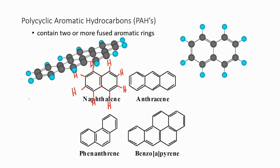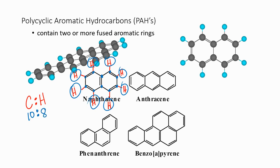One way to analyze these polycyclic aromatic hydrocarbons is to look at the carbon-to-hydrogen ratio. For naphthalene, with two fused benzene rings, we might expect 12 carbons (6+6), but they share two central carbons, so it only has 10. It has 8 hydrogens. That gives a carbon-to-hydrogen ratio of 10:8, or simplified, 5:4.